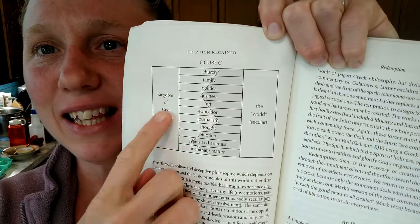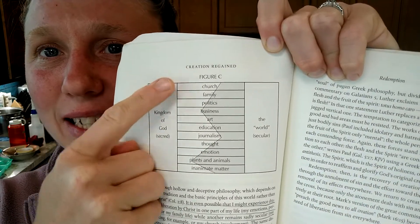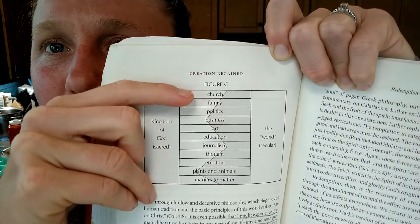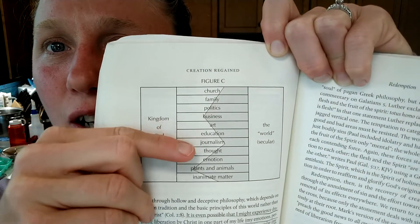All right, so you can see that the Kingdom of God is this white side and the Kingdom of Satan is the shaded side. Some of the categories of the created world are going down in the middle.